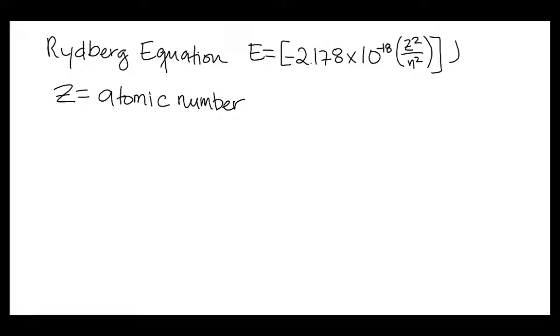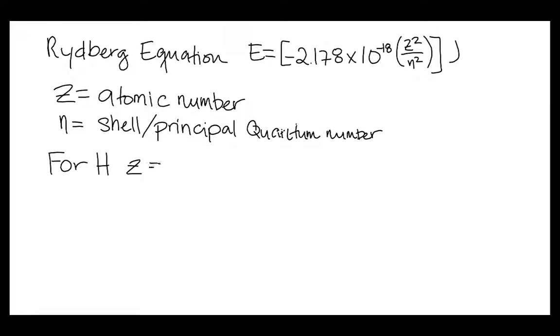Where z is the atomic number and n is the shell or principal quantum number of that orbital. For this exercise, we're going to use the hydrogen atom, which has a z value of 1.